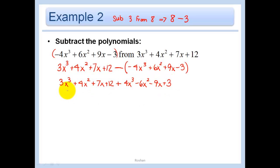And now I'm going to combine like terms. So 3 plus 4 is 7x cubed. And then I have my x squareds. So 4 minus 6 of them is minus 2x squared. And then x is 7 minus 9 is minus 2x. And then finally, we have just our constant term. So 12 plus 3 is 15. And that's that answer.